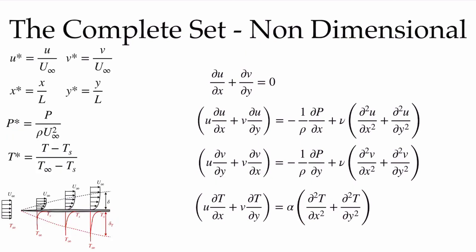Now I want to non-dimensionalize these equations. Any velocity component is normalized by the free stream velocity u-infinity — as in boundary layer flow over a surface where far from the surface we have u-infinity. Any coordinate x or y is non-dimensionalized by the length of our plate. Pressure is normalized by dividing by rho times u-infinity squared. Temperature is non-dimensionalized as the difference between local temperature and the surface temperature divided by T-infinity minus T-surface.